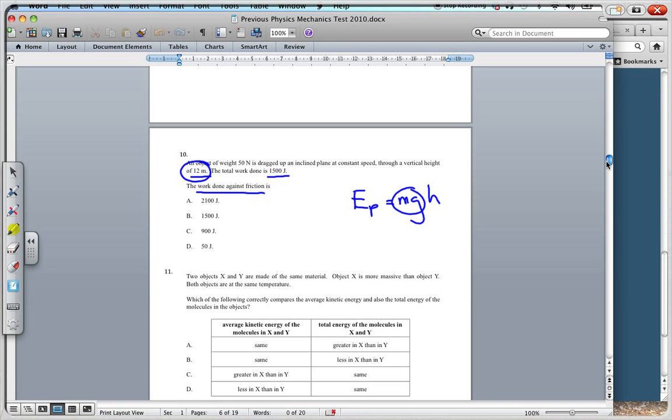This MG is the 50 N. So, it would be EP is equal to 50 times by the height, which is 12. So, we've got 600 N. So, 600 N has been done to increase the potential energy. Now, the rest must be to overcome friction. And that's 1,500. So, it must be 900 joules that gets done. That is used for friction.